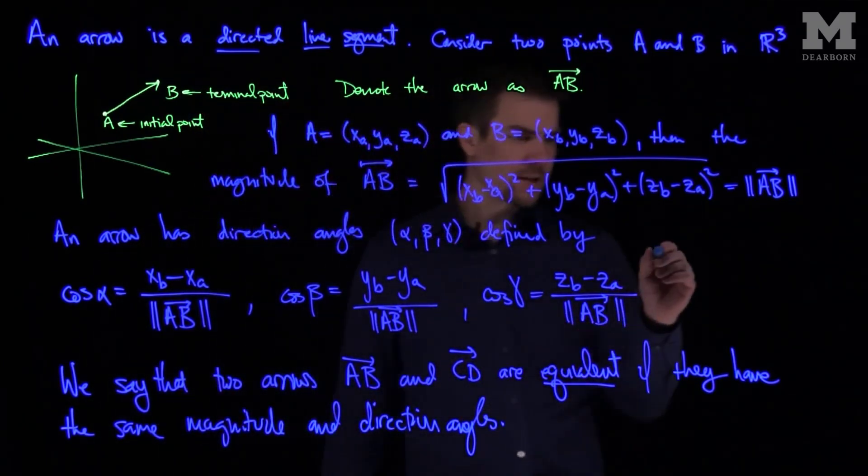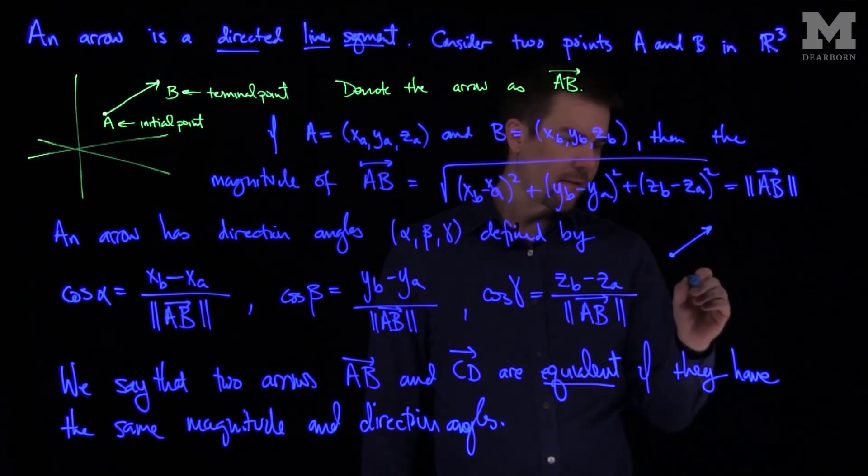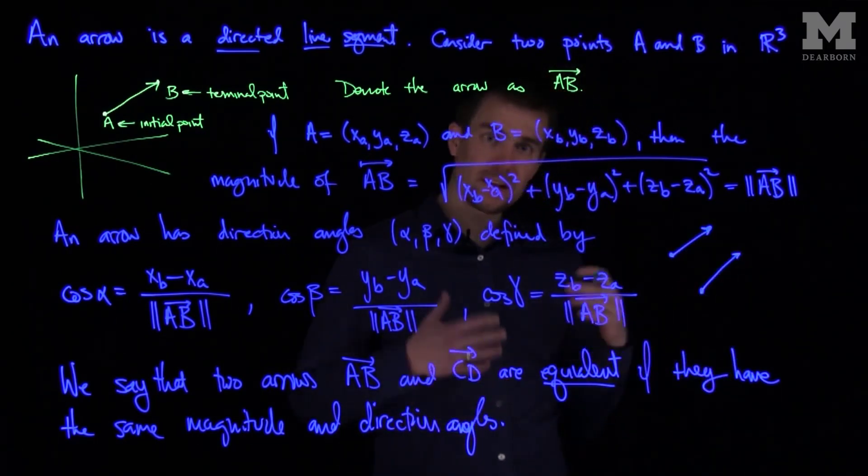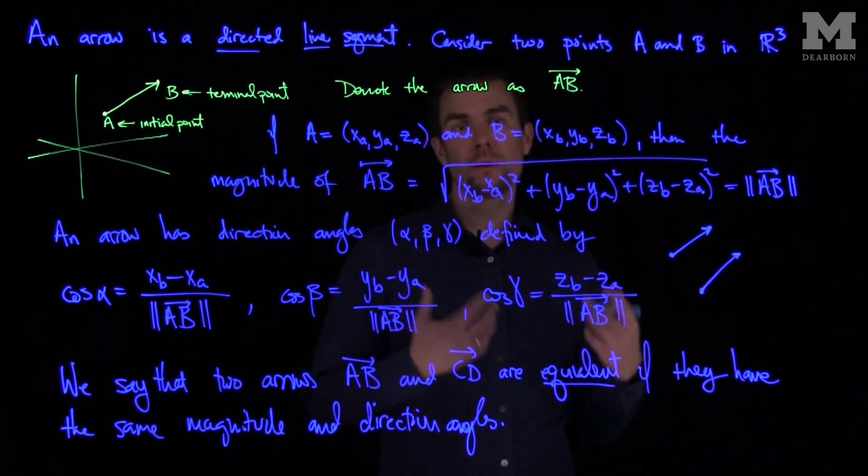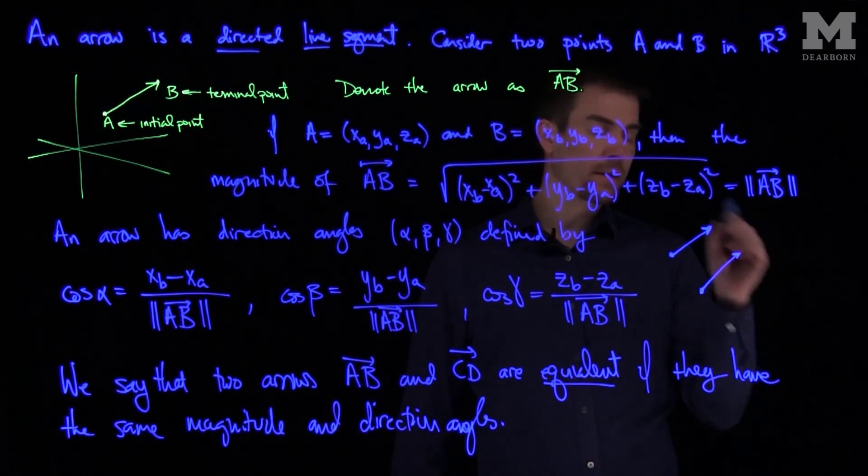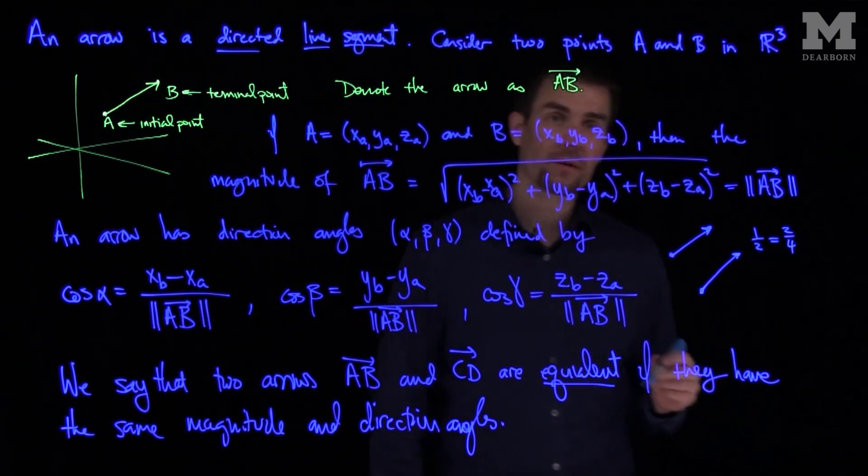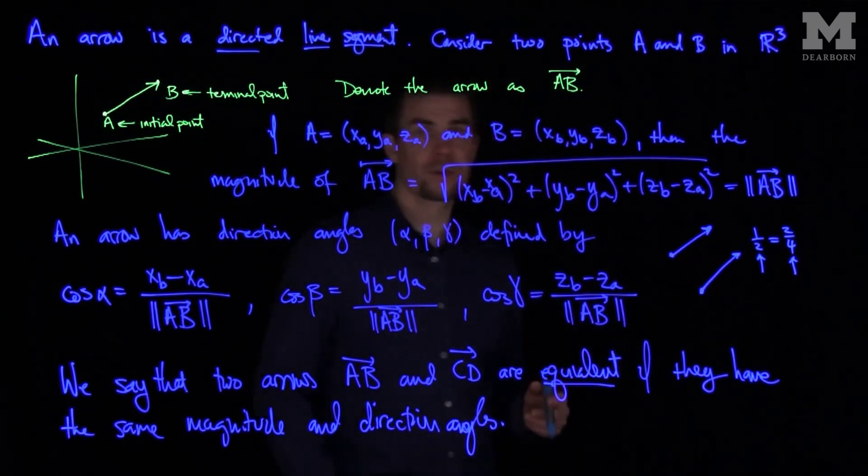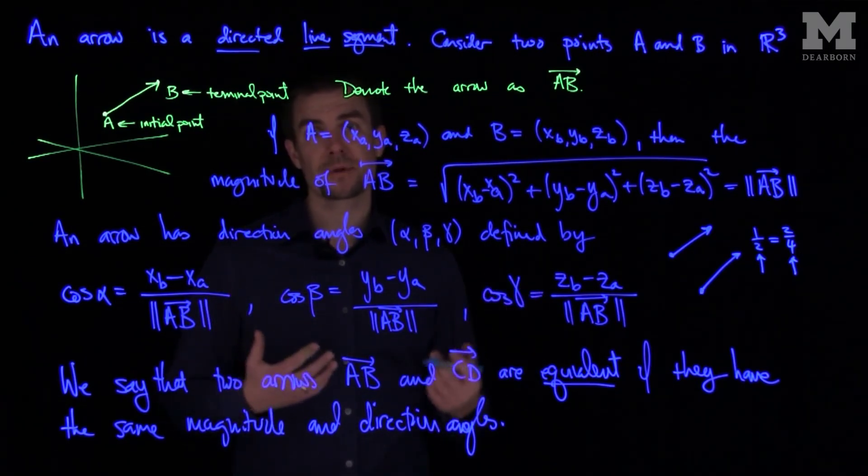Roughly what this means is that if you have two arrows, here's A and here's B, if I draw another arrow from two points C, D that has the same length and same direction with respect to each of the coordinate axes, then those two arrows will be called equivalent. Very similar to when we think about fractions, like saying one half is the same thing as two fourths. So both of these are different in terms of what their numerator and denominators are, but those are equivalent in the sense that the fraction they represent is the same.